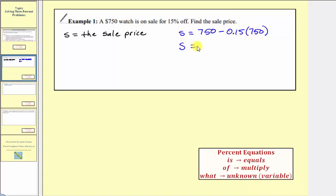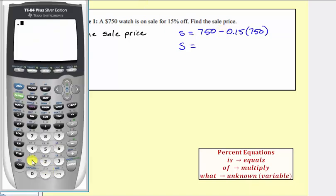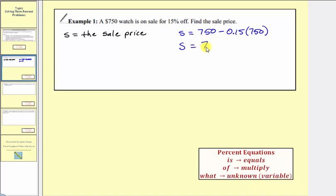So we'll first find this product and then find the difference. So 0.15 times 750 equals 112.5. So we have 750 minus 112.5, so s is equal to 637.5. But this is really dollars, so we'll say the sale price is $637.50.